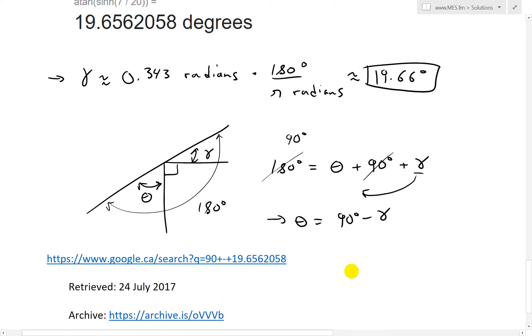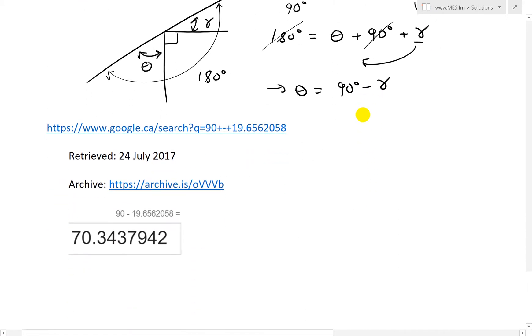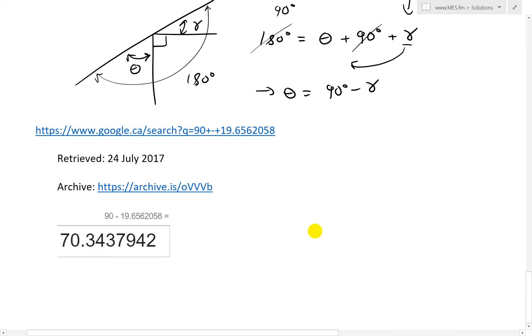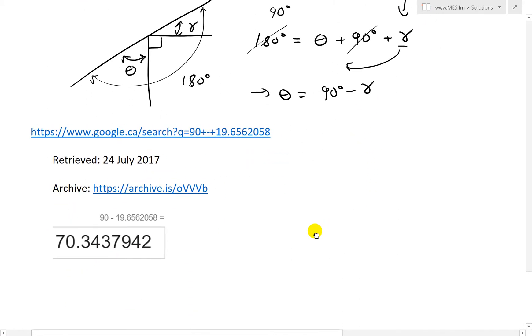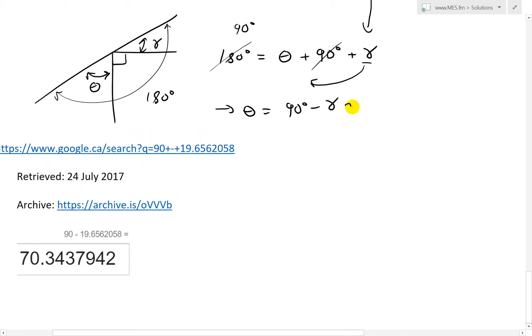Roughly round that up, put it in there, and we get this 70.34379, et cetera, degrees. So this roughly equals to, I'll just round this up to 70.34 degrees like that.